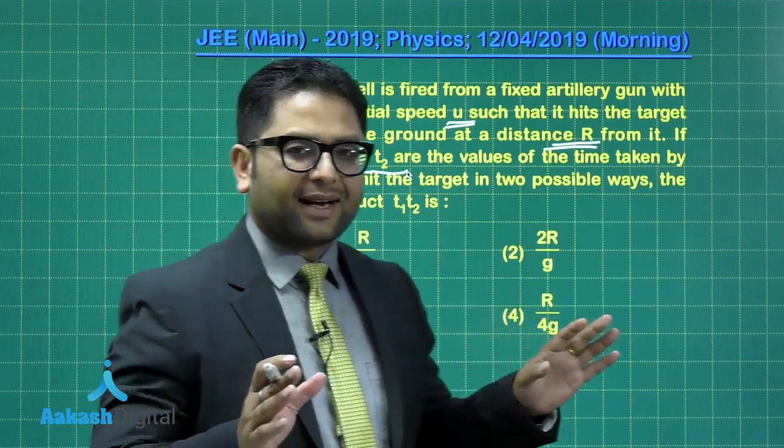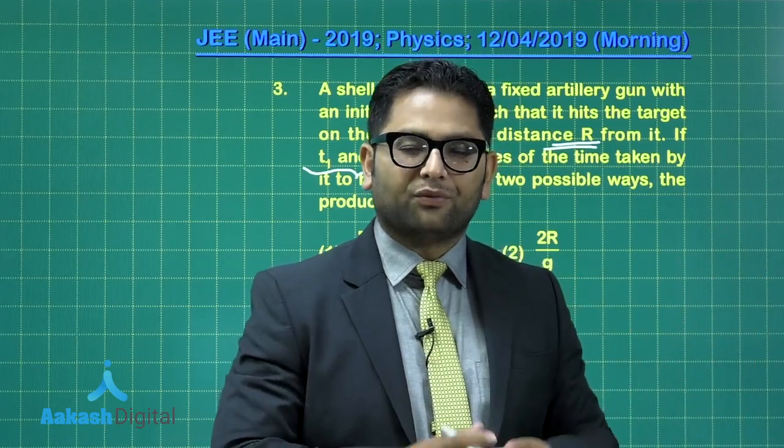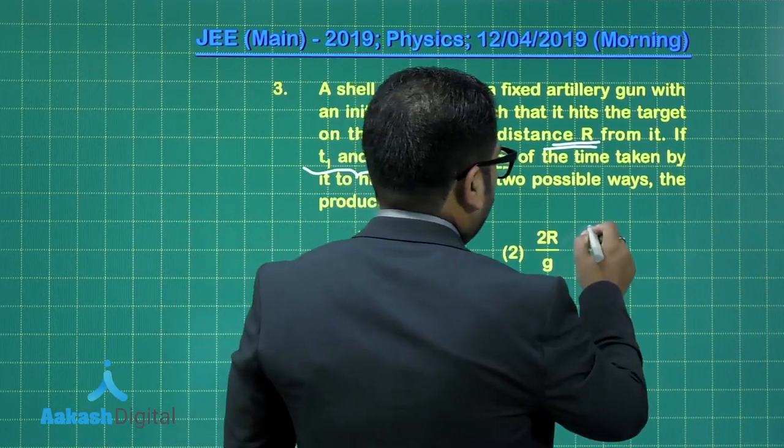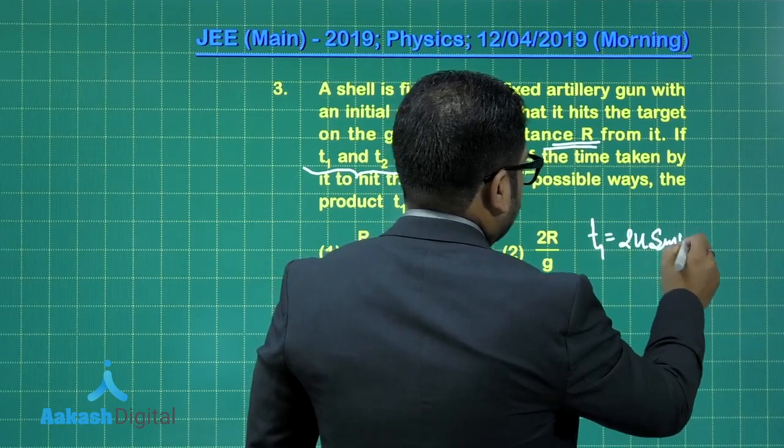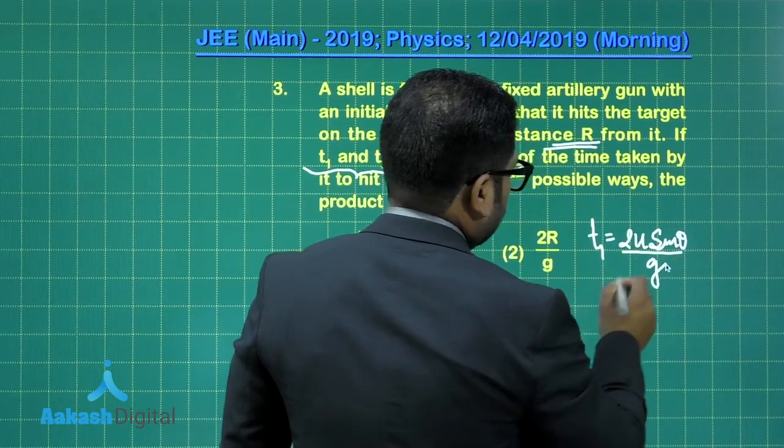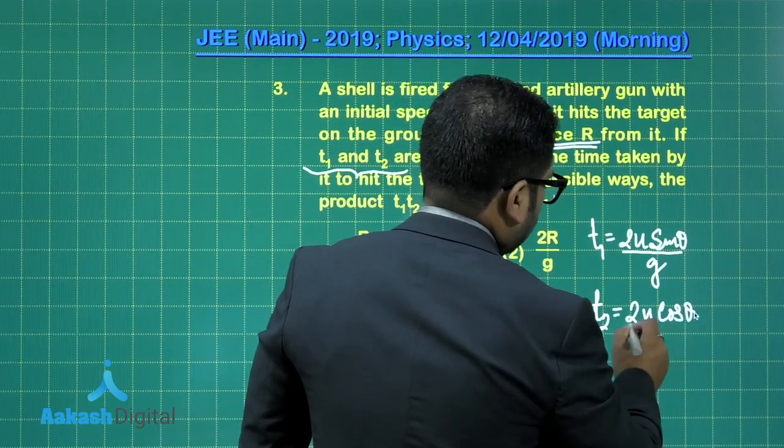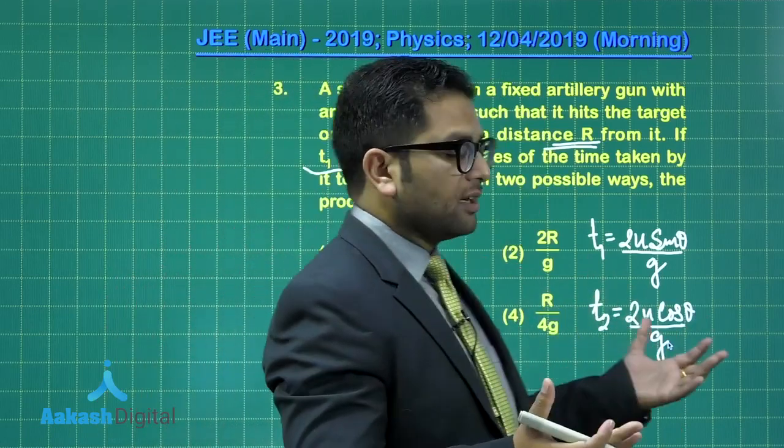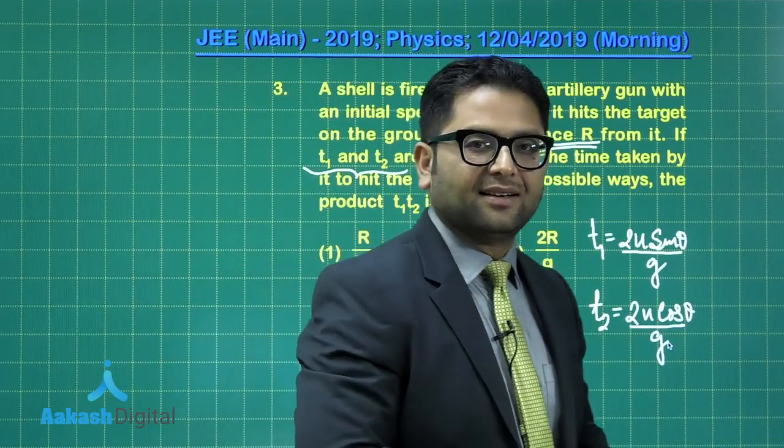Well, a very common fact that for complementary angles, theta and 90 minus theta, the range would be same. We'd all do this. It's a very regular feature. So for t1, that will be 2u sine theta by g, and t2 will be 2u cos theta by g. So t1, t2. One for the angle of launch theta, the other for the angle of launch 90 minus theta.